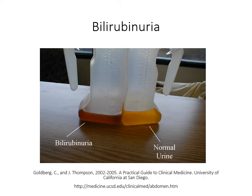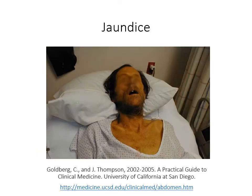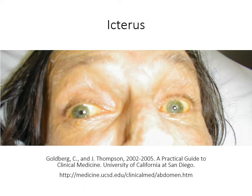This figure shows the normal color of urine compared to bilirubinuria — because extra bilirubin is filtered out when blood reaches the kidneys, resulting in that dark brown urine color. Jaundice shows bilirubin depositing in the skin causing a yellowing of the skin. And here we see bilirubin deposited in the eyes, causing yellowing of the eyes, which is icterus.